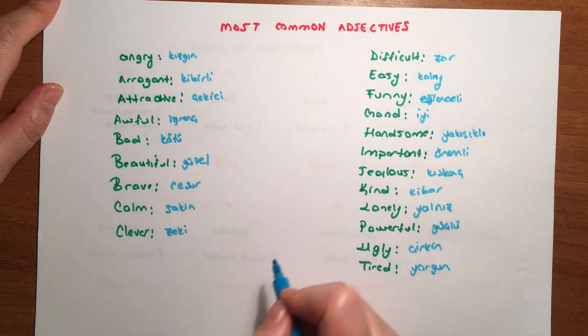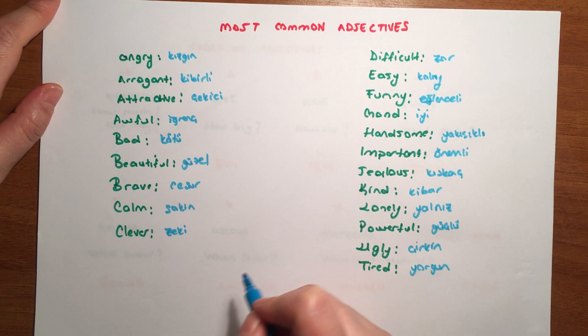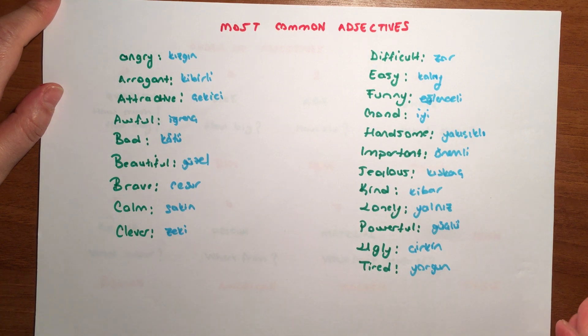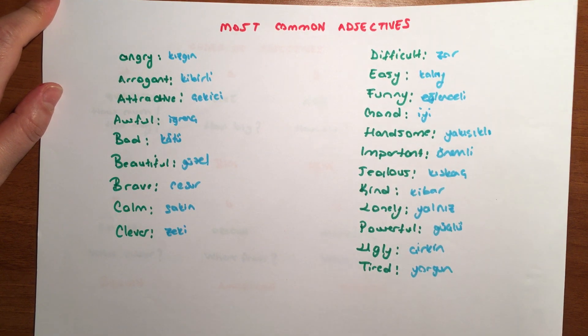Let's see some example sentences. I am angry now. He is arrogant. She is attractive. She is an attractive girl, okay? This soap is awful. It is an awful soap, you can say.